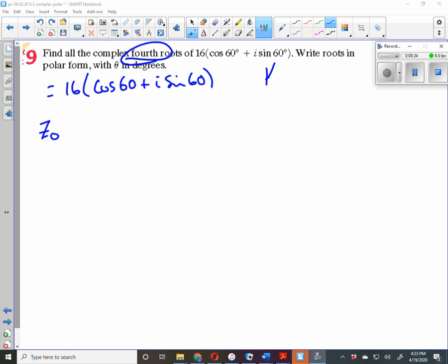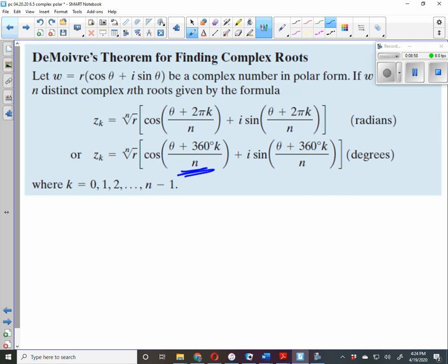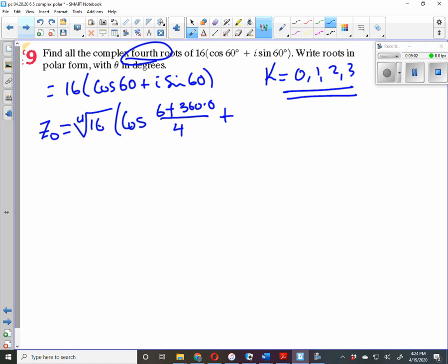k equals 0, 1, 2, 3. There are four roots there, starting at zero. So z₀ is our first one, equals the fourth root of 16, cosine (60 + 360×0) divided by 4, plus i sine. And we know that 360 times zero is zero.